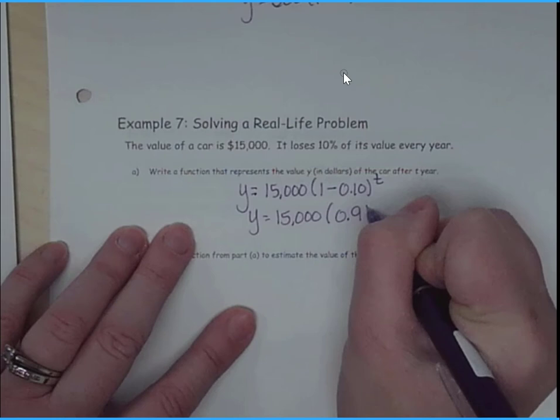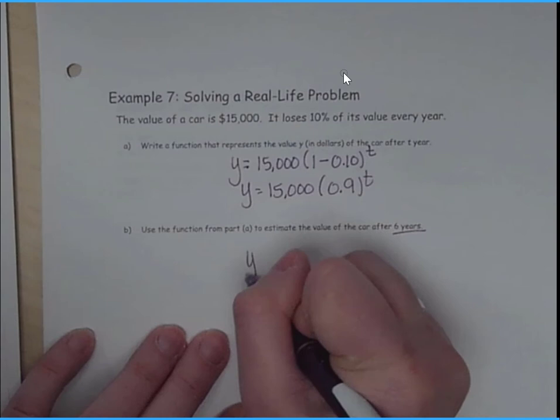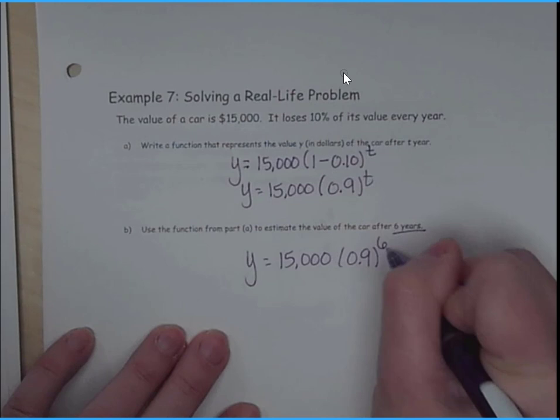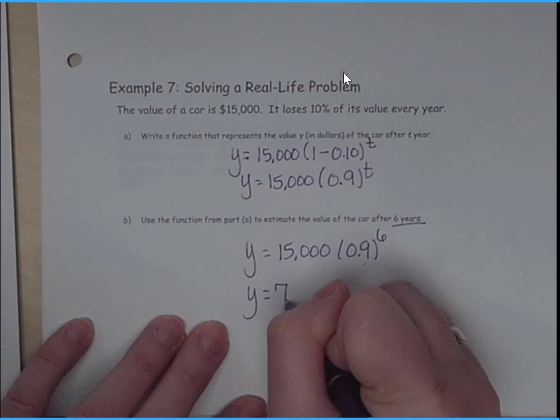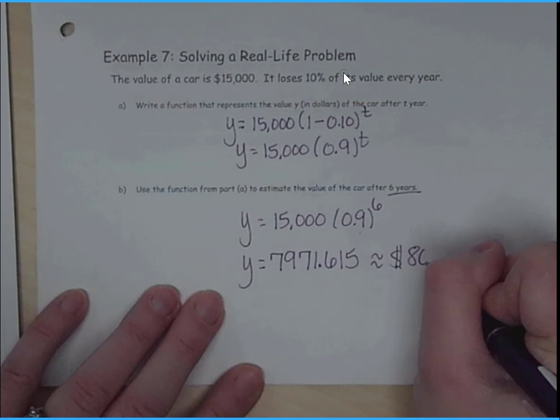Now let's figure out what the value of my car is after six years. So y equals 15,000 times 0.9 to the sixth. So y equals 7,971 dollars. And we're going to round this to about $8,000. It's quite a loss after about six years. But that is real life. All right, everybody, have a great day.